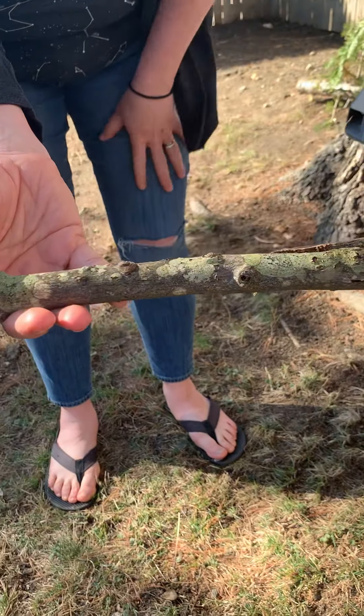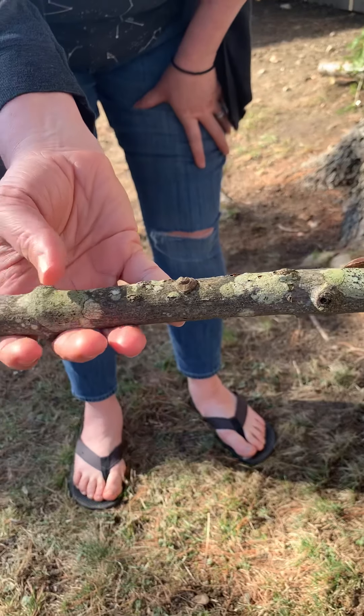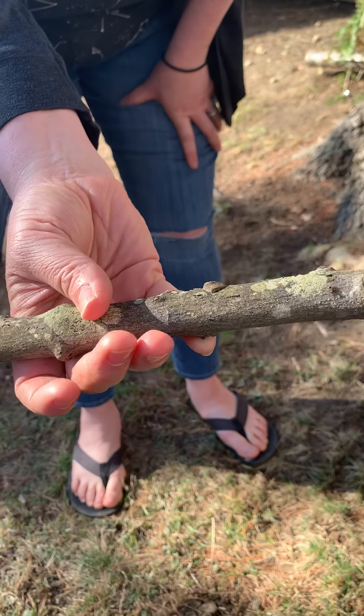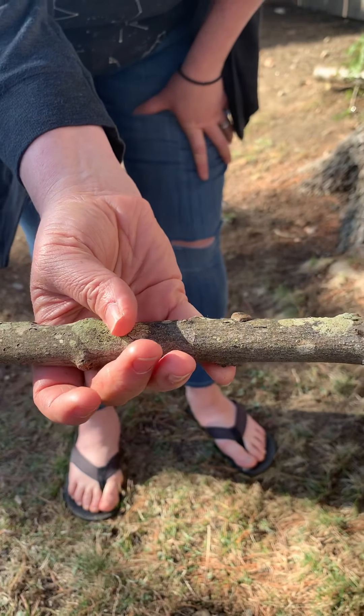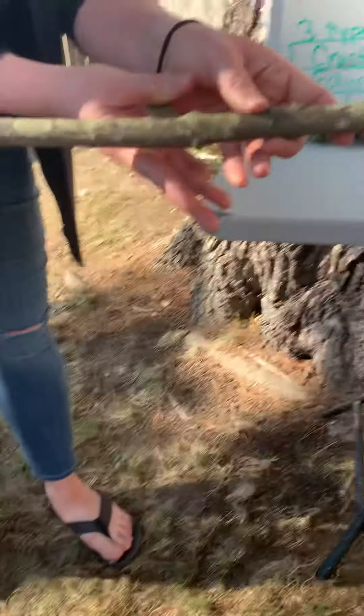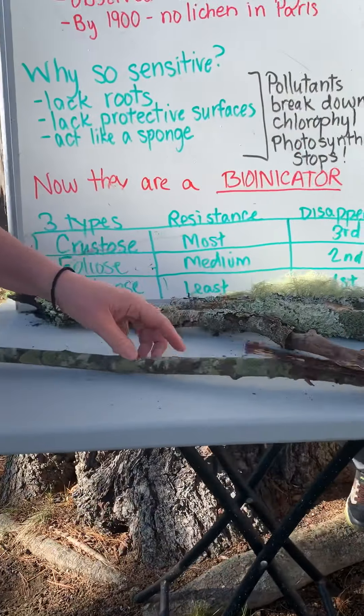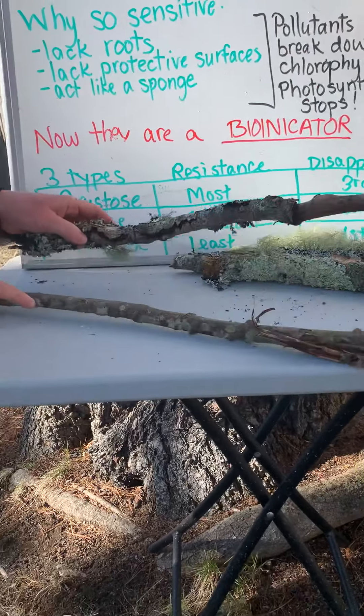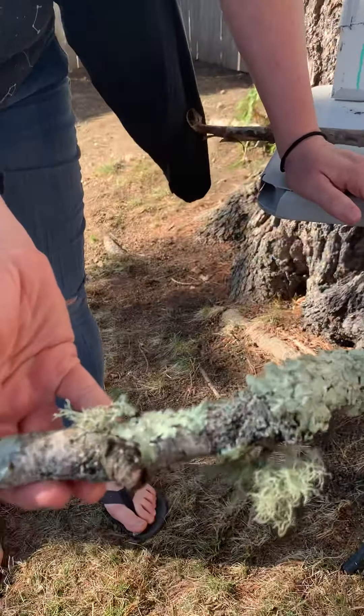Lichen is very sensitive because they don't have any roots, they don't have protective surfaces, so they act like a sponge and just soak up everything from the atmosphere. Pollutants can break down the chlorophyll, causing photosynthesis to stop, and it kills the lichen.